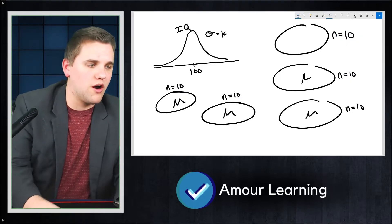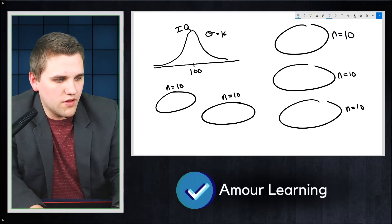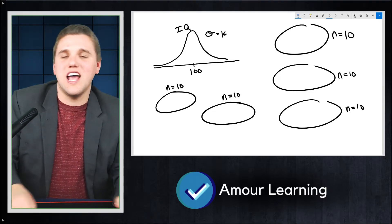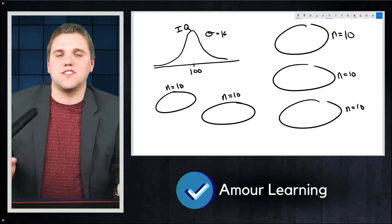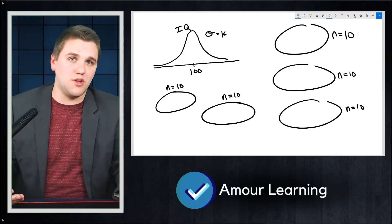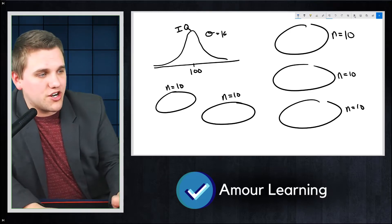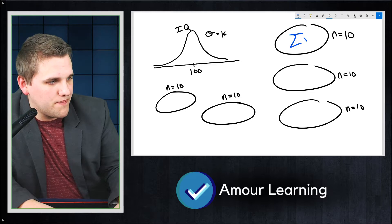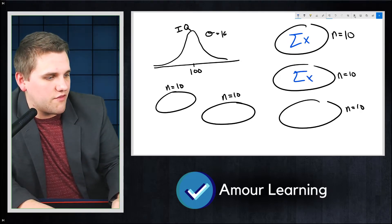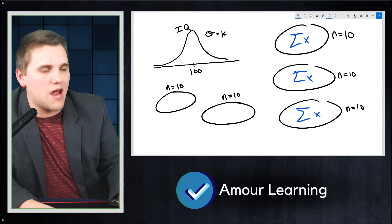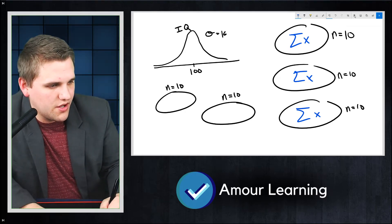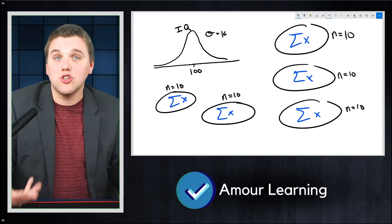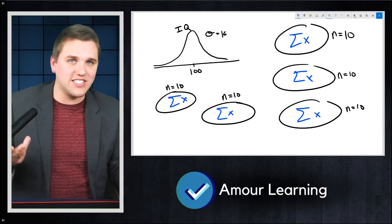Now let's talk about the central limit theorem for sums, which is a little bit different. It's basically the same exact thing, except instead of saying that the averages are more normally distributed as sample sizes get larger, it talks about the sum of the values. So if I take the sum of all the values — if I add up all the IQ scores for every sample — then all of those sums would also be more normally distributed as the sample sizes get larger.